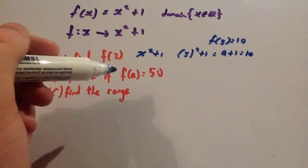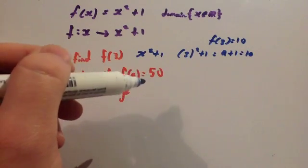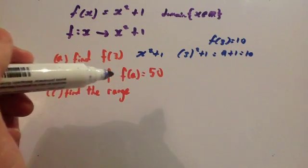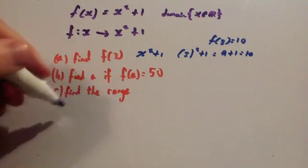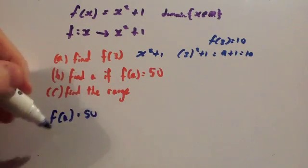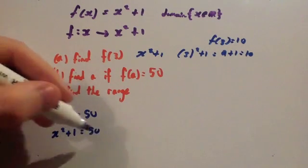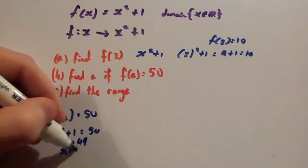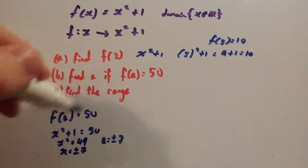Next: find a if f(a) = 50. In other words, the value in the range is 50 and you've got to find out what element of the domain would map to that — what value you've put in to get that. So f(a) = 50, therefore x² + 1 = 50. Take 1 away: x² = 49. So x = ±7, meaning a = ±7. So a has two different values here.